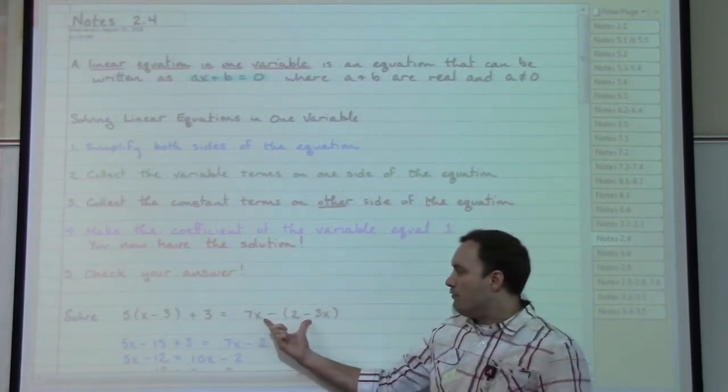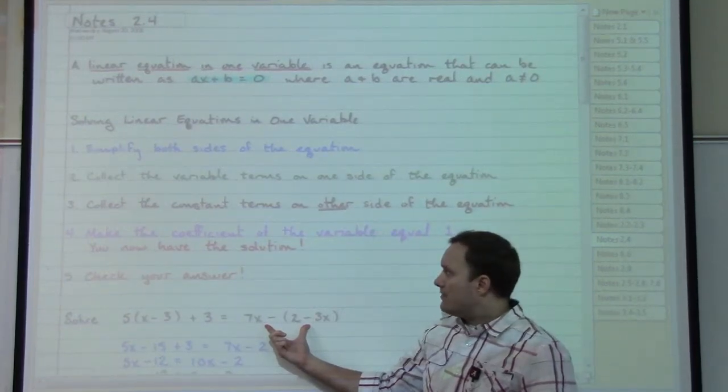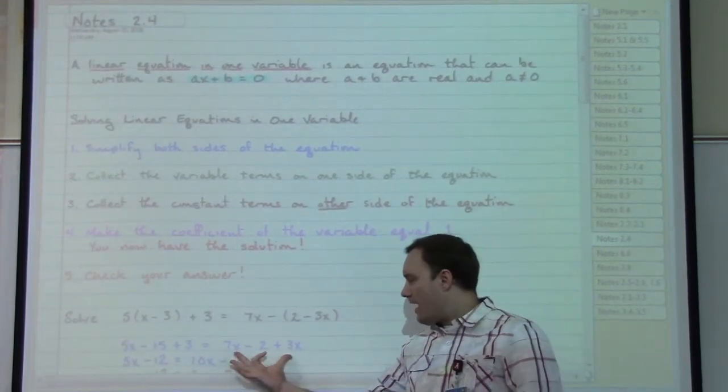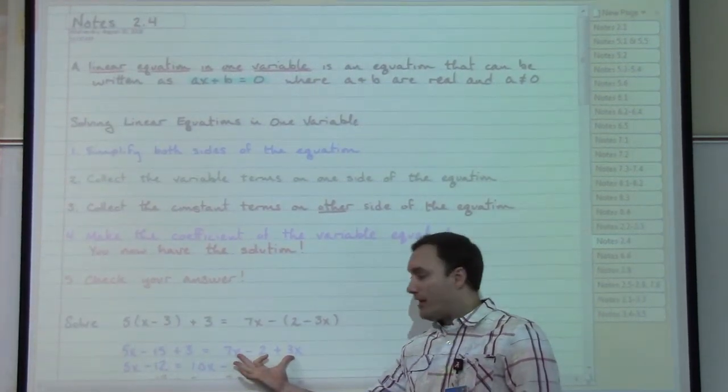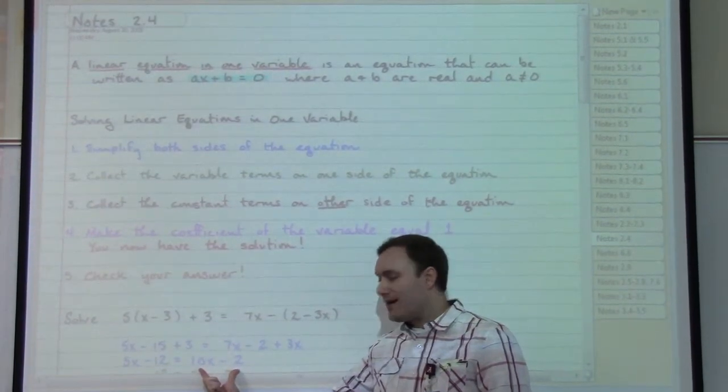I want to then move to the right hand side of my equal sign and work out simplifying that expression. So I distribute the negative, then I have the two pieces with the x in them that can be combined together to give me 10x minus 2.